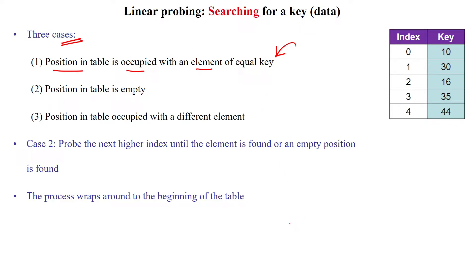For example, if you are calculating 5 mod 5, you get 0. But at the 0th index, some other element is available — 10 is available. That is the first issue. And the second one is the location may be empty because some element was deleted, like 10 was deleted.